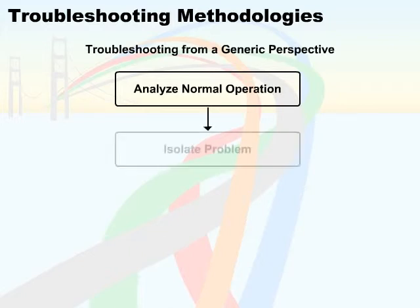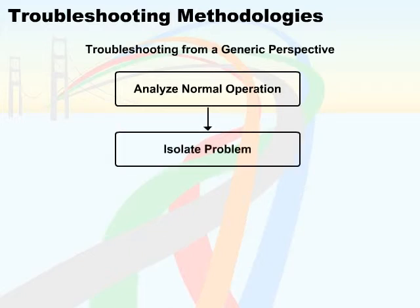Next, we should try to isolate the cause of the problem — specifically, the parts or devices of the network that are not showing the predictable behavior that we expect.